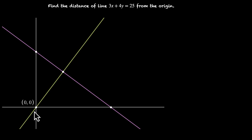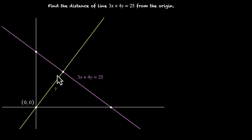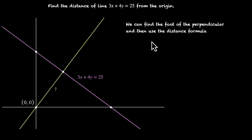So how do we do this? Let's solve this together. 3x + 4y = 25 is our line, and this is the length we're after. If we know this point, we can use the distance formula. This point is called the foot of the perpendicular from the origin. We can find the foot of the perpendicular and then use the distance formula. Let's assume the coordinates are F(a, b) — F for foot of the perpendicular — where a and b are its x and y coordinates. We've introduced two variables, so we need two equations to solve this.